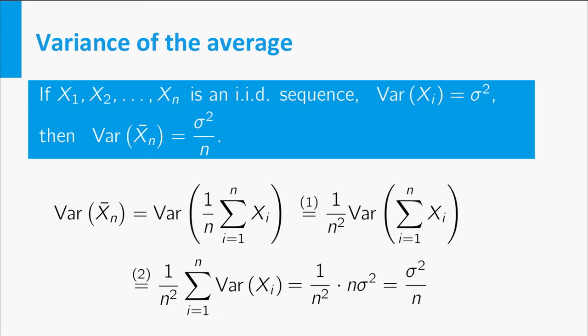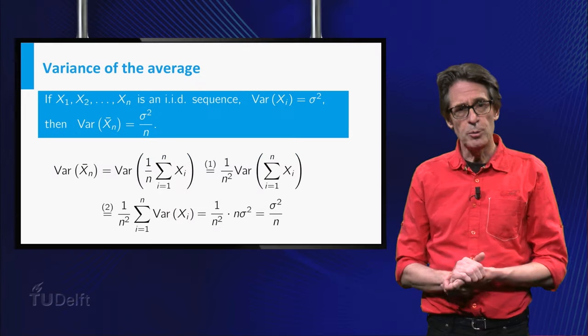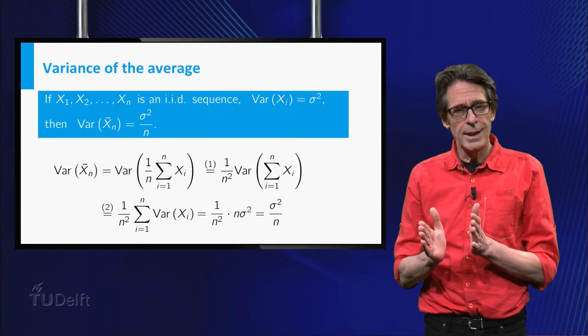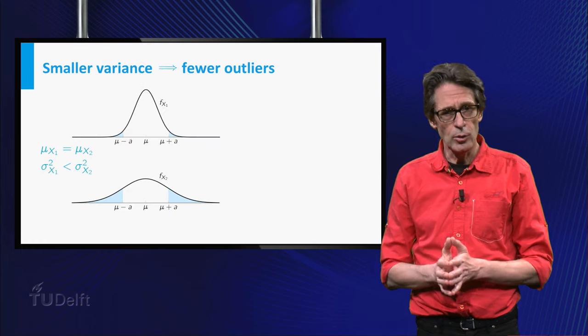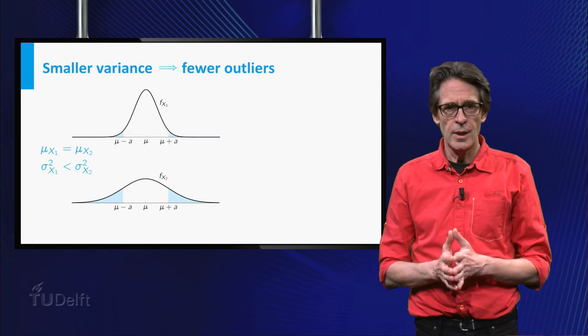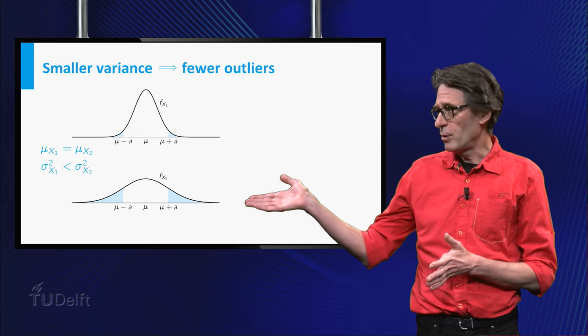So for larger n the variance of the average becomes smaller. Intuitively this means that for larger n the average will stay closer to the expectation. The picture gives a nice display of this.